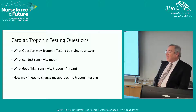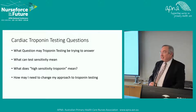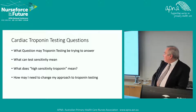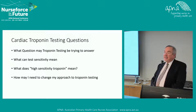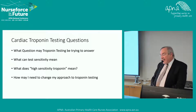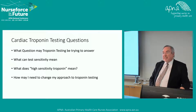We're talking about high sensitivity troponins, and what does a sensitive test mean? It can have two main meanings in terms of laboratory testing: a clinical meaning and a laboratory meaning. So what do we mean by high sensitivity troponin? What does it mean compared to what's not as high sensitivity? And do I need to change my approach to troponin testing, particularly in the context of use in general practice in the community?